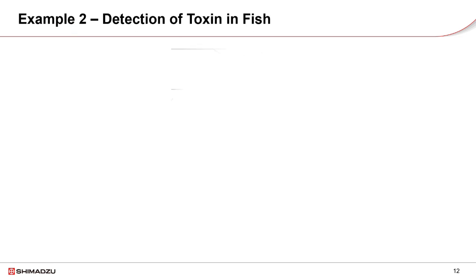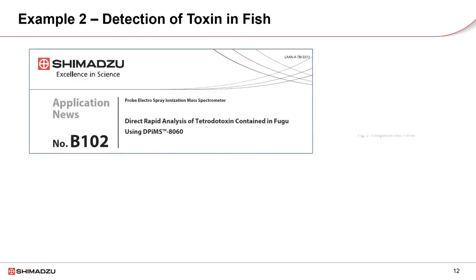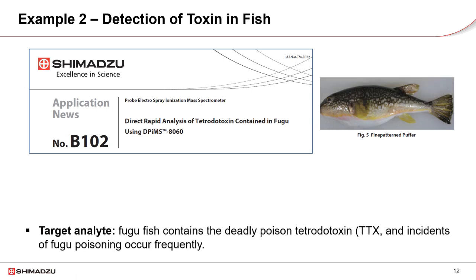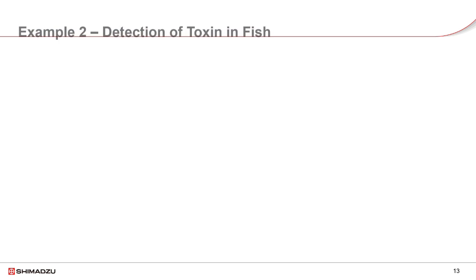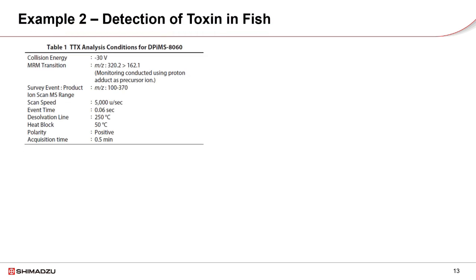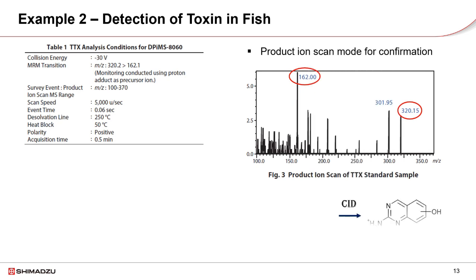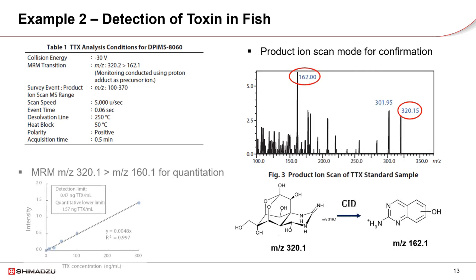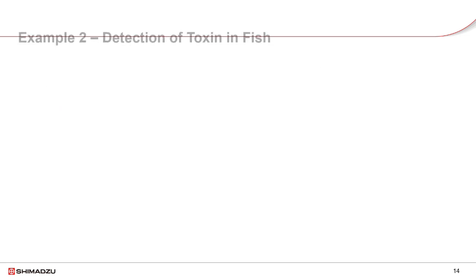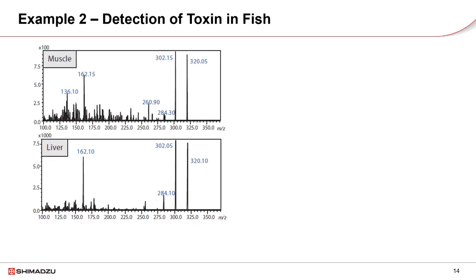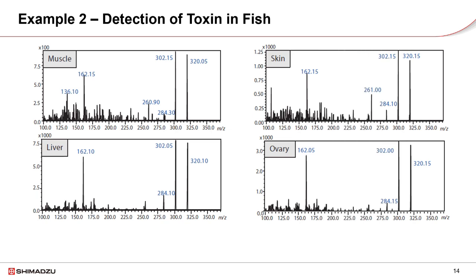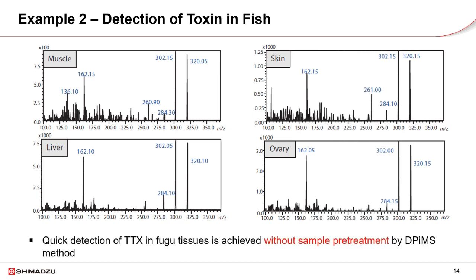The second example detects a toxin called tetrodotoxin (TTX) in fugu fish. The sample is in solid form from muscle, skin, liver, or ovary of the fish. A special biological sample plate is needed; solvent is dripped on top of the placed sample. Product ion scan mode is used for confirmation of tetrodotoxin, detecting the precursor and fragment spectrum. For quantitation, MRM mode is used for higher sensitivity. Tetrodotoxin was detected in all tissue types without the tedious conventional sample preparation.